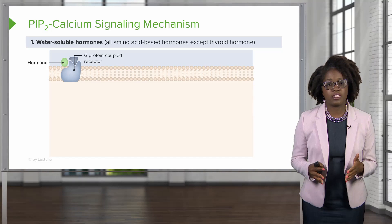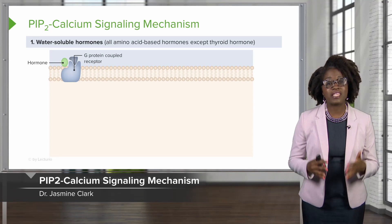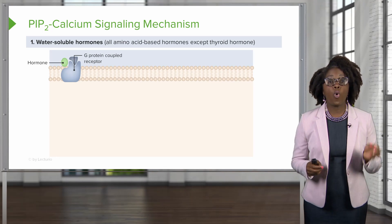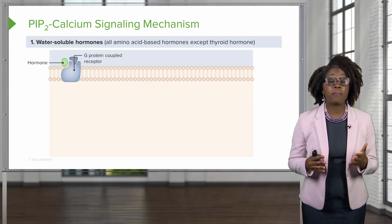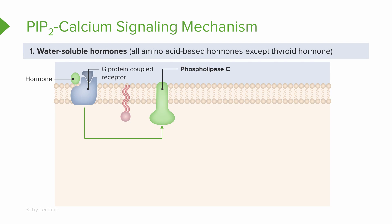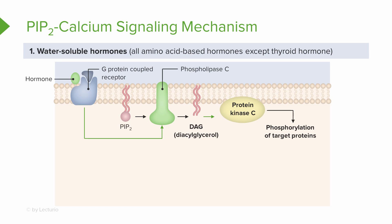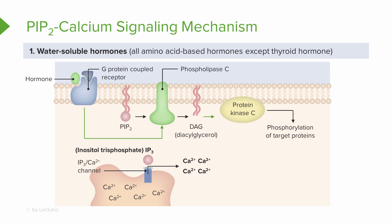The second second messenger system found in our cells is the PIP2 calcium signaling mechanism. In this mechanism, a hormone binds to a G protein-coupled receptor in the membrane of the target cell. This activates a G protein that then activates a different effector enzyme known as phospholipase C. This activated phospholipase C splits the membrane protein PIP2 into two different second messengers. The first is diacylglycerol, or DAG, which activates protein kinases that can subsequently phosphorylate proteins. The second is inositol triphosphate, or IP3.